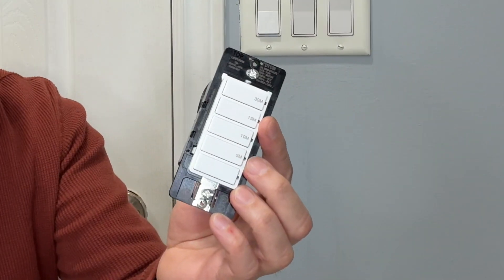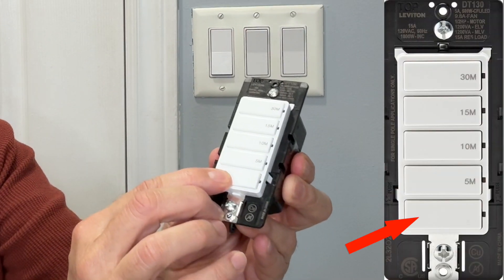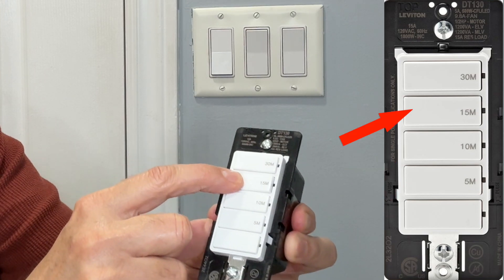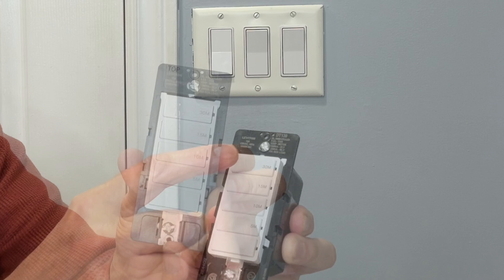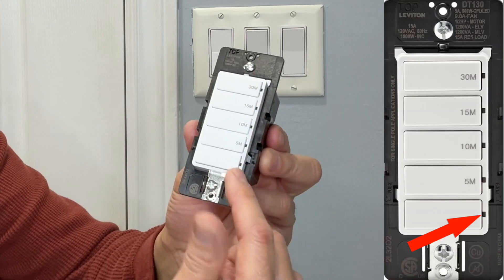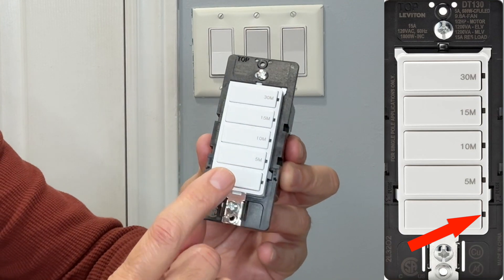This is how the switch looks like. You can see the buttons here. Off button, 5 minute timer, 10 minute timer, 15 minute timer and 30 minute timer. With each of these buttons there is an indicator light here which indicates how long the fan will keep running after the switch is turned on.